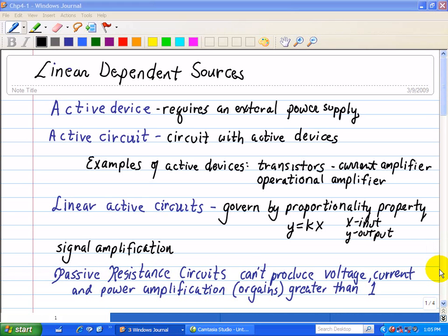An active device is a component that requires an external power supply to operate correctly. An active circuit is one that contains one or more active devices.